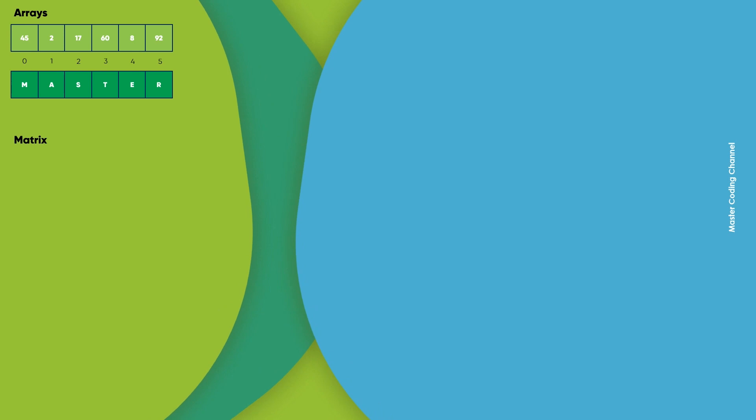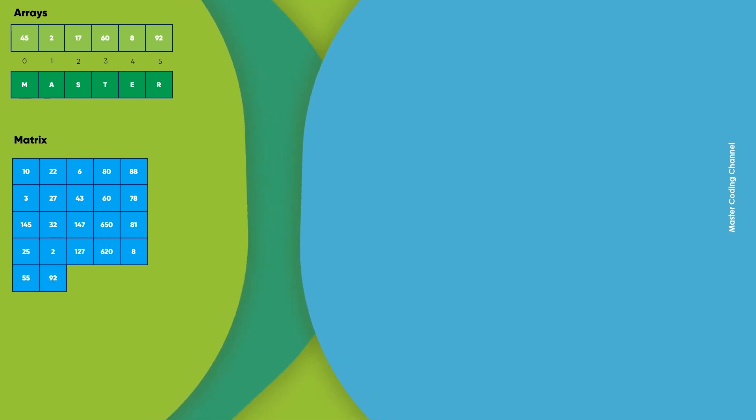The second type is the matrix. The matrix is a 2D array that also stores the same data type in a matrix way. Also we are going to learn about operations like inserting, updating, deleting, searching, and so on. They are very similar to arrays but they are two-dimensional arrays.